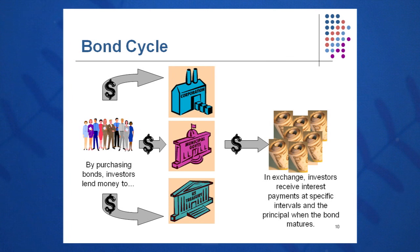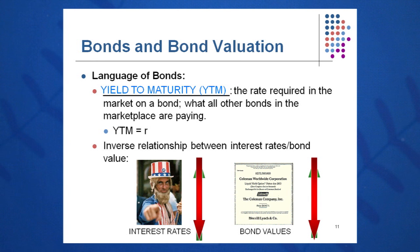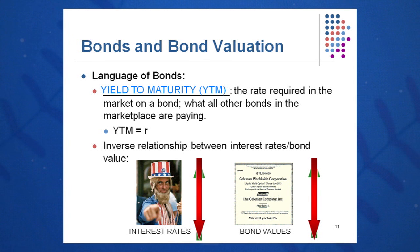Yield to maturity is a very important term. In that big bond formula with five variables, if we're given four, we can calculate the fifth. YTM is little r — the rate required by all other bonds in the market at the time. My bond will always pay 8% over the course of 30 years, but all other bonds in the market will be paying differing rates. So if I need to sell that bond, the price I get will be influenced by what is happening to interest rates at that time.